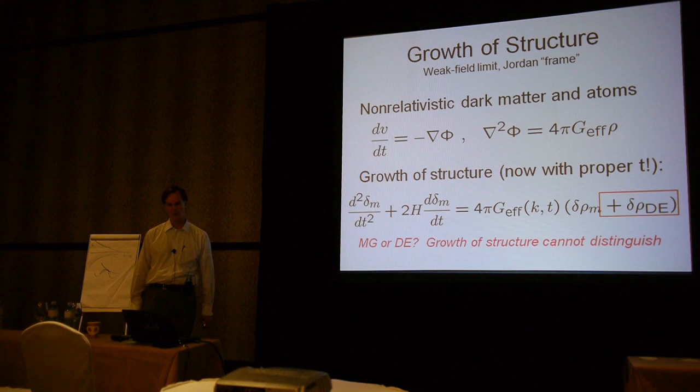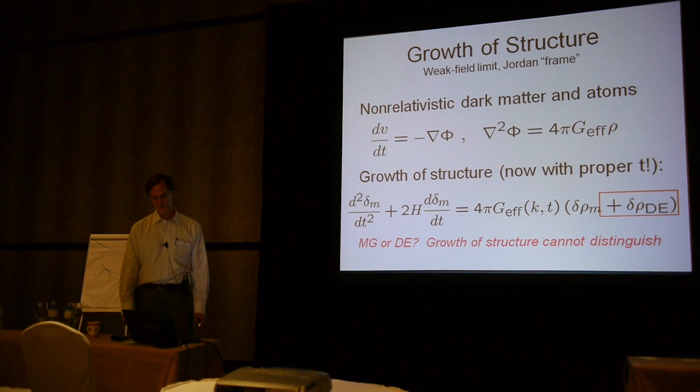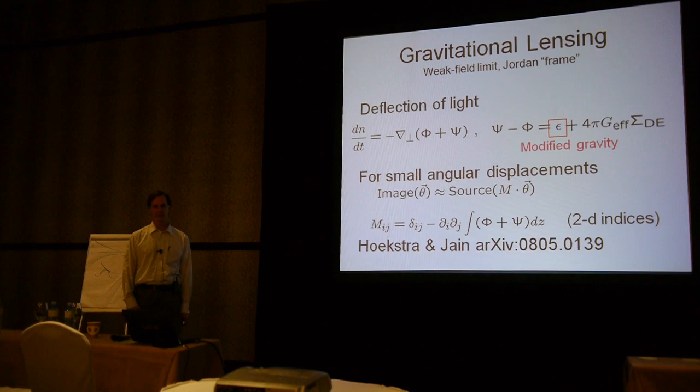However, there is a second term involving dark energy, and this equation alone cannot distinguish the sources of variations on the right-hand side. Even with perfect measurements of the density fluctuations and corrected galaxy biasing, we could not distinguish what drives those variations. So one needs more observables, and gravitational lensing helps, although it introduces its own theoretical functions to be determined.